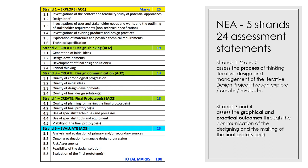Whereas with previous projects you might have done all your research at the very start, here you do bits of research to get going, then start designing, and when you identify an issue or something you don't know, you do research then — it's a very natural progression. You'll also look at communicating your initial ideas: the quality of your sketching, the quality of your modelling, and so on. For the Final Prototype strand, there'll be planning, the prototype in physical form, and a variety of techniques and materials. The Evaluate strand involves using research correctly and ensuring ongoing evaluation throughout, with gaining feedback as you go being fundamental.